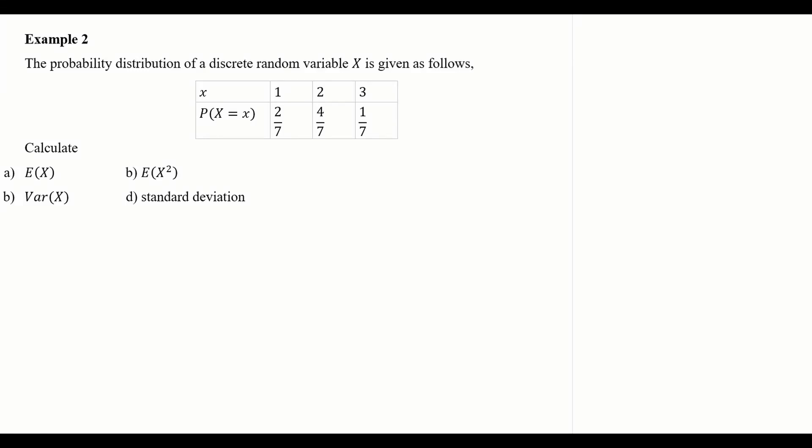Example 2: the probability distribution of a discrete random variable X is given in the following table. We have the values of X: 1, 2, 3, and the corresponding probabilities are 2/7, 4/7, and 1/7. The questions ask us to calculate: (a) the expected value of X, (b) the expected value of X squared, (c) the variance of X, and (d) the standard deviation.